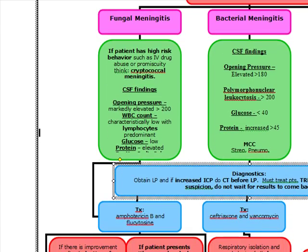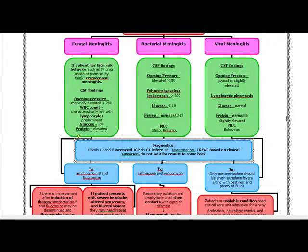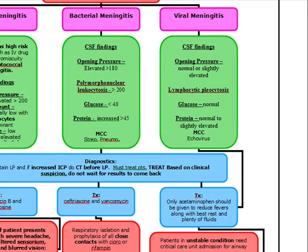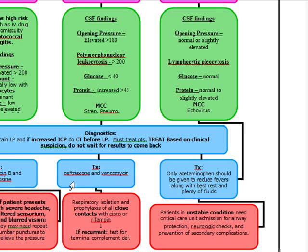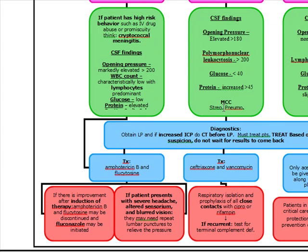Treatment is based on risk factors and presentation. For fungal meningitis, treat with amphotericin B and flucytosine. For bacterial meningitis due to strep pneumo, treat with ceftriaxone and vancomycin. For Neisseria meningitidis, treat with ampicillin or a third-generation cephalosporin. Listeria is treated with ampicillin, and GBS in newborns is also treated with ampicillin.